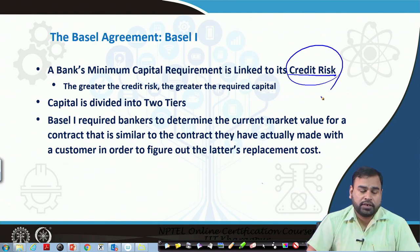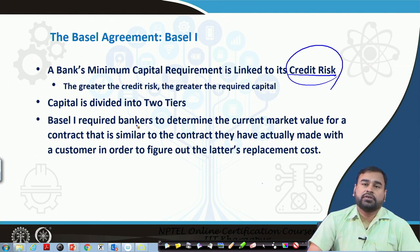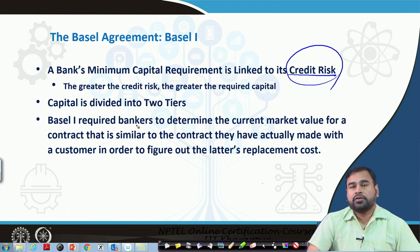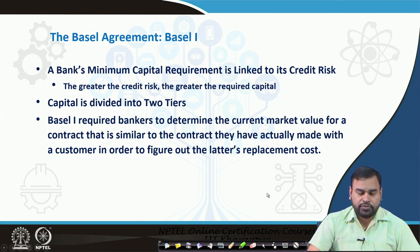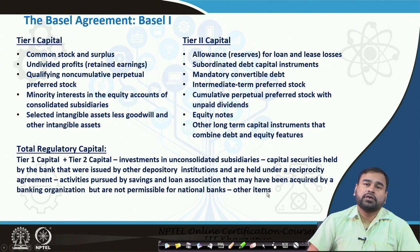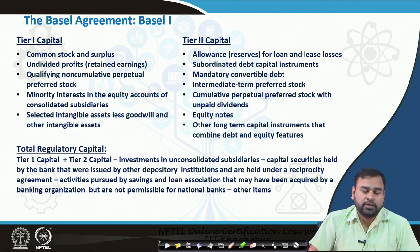These are the basic agreements of Basel 1. It is mostly relied upon the capital adequacy ratio. We will see over this discussion how the capital adequacy ratio is measured and what kind of changes have taken place over the years with respect to regulatory norms. There are two types of capital Basel has considered: tier 1 and tier 2.